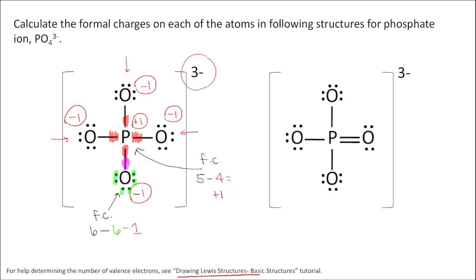Now let's compare to the structure on the right. The oxygen on the bottom, and the ones on the left and top, each have six non-bonding electrons and one bond to phosphorus — so they all have a formal charge of negative one, just like in the left structure. However, the oxygen on the right looks different. Its formal charge: six valence electrons minus four non-bonding electrons minus two (one from each of the two bonds) equals zero. This oxygen has a formal charge of zero.